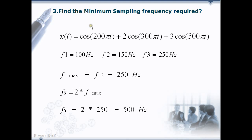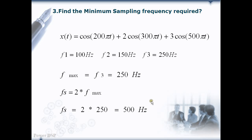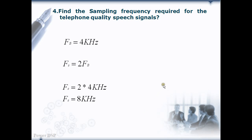In this example, we need to find the minimum sampling frequency required for a signal which has three frequency components — it is called a composite signal. The three frequency components are 100 Hz, 150 Hz, and 250 Hz, of which f3 = 250 Hz is the maximum. Therefore, f_s = 2 * f_max = 2 * 250 = 500 Hz. The Nyquist rate for this composite signal is 500 Hz.